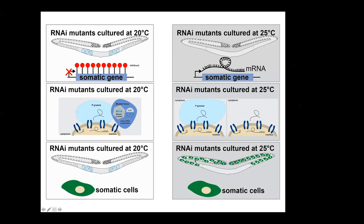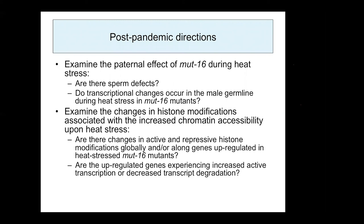For future directions, we'd like to examine differences between the paternal and maternal effects of MUT-16 — specifically whether sperm defects underlie the paternal effect after a single generation at heat stress, and whether transcriptional changes in the male germline differ from those in the hermaphroditic germline. We would also like to examine changes in histone modifications associated with increased chromatin accessibility upon heat stress, including active and repressive histone modifications globally and along specifically upregulated genes, and to determine whether these genes experience increased active transcription or decreased transcript degradation.